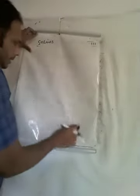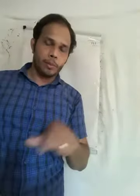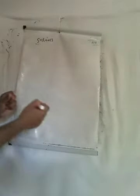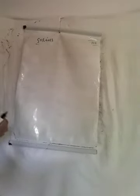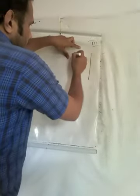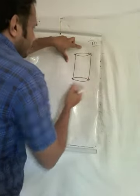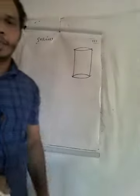Now we will discuss some problems based on this. What is the cylinder? You already know the shape of a cylinder. Most pillars are in the shape of a cylinder. This is the shape of a cylinder.